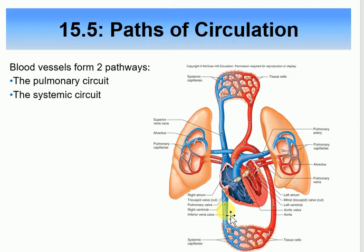Now the deoxygenated blood is in the right atrium. From the right atrium it flows through the tricuspid valve into the right ventricle — still deoxygenated. It then goes to the pulmonary trunk — still deoxygenated — and then to the right and left pulmonary arteries — still deoxygenated. Remember, these are arteries, but they carry deoxygenated blood.